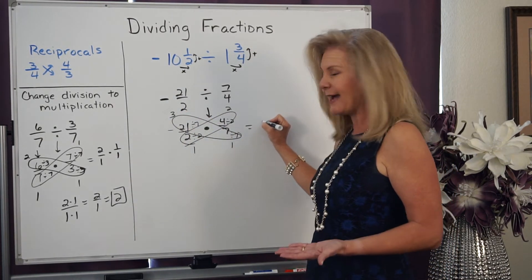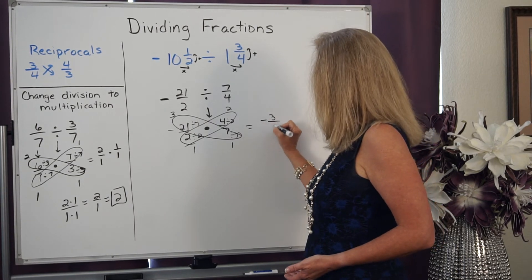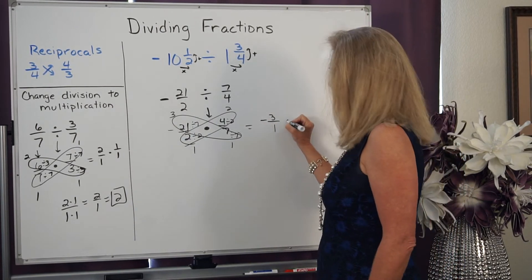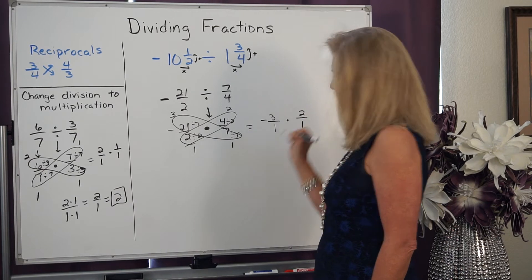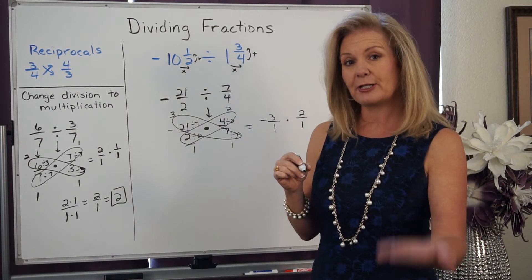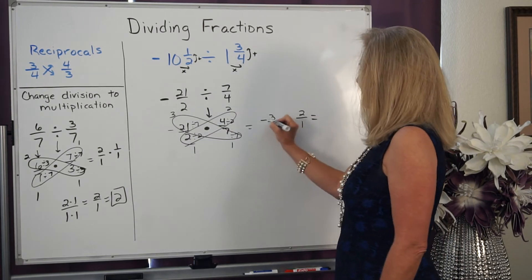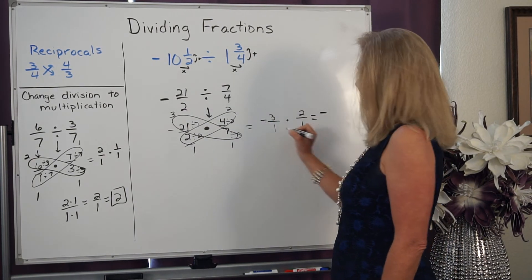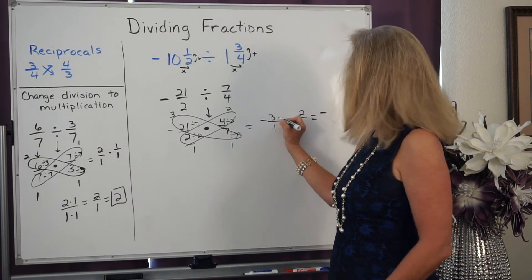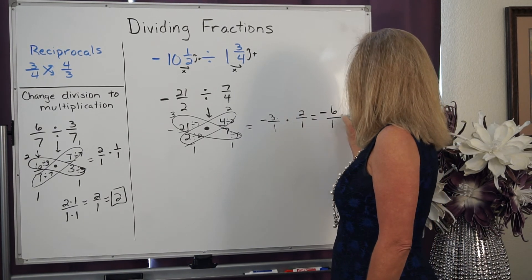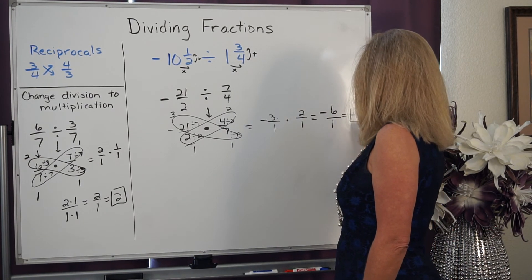Now I really have the fraction -3/1 times 2/1, and it's numerator times numerator, denominator times denominator. It's a negative times a positive, so it's got to be negative. 3 times 2 is 6, 1 times 1 is 1. So my answer is -6.